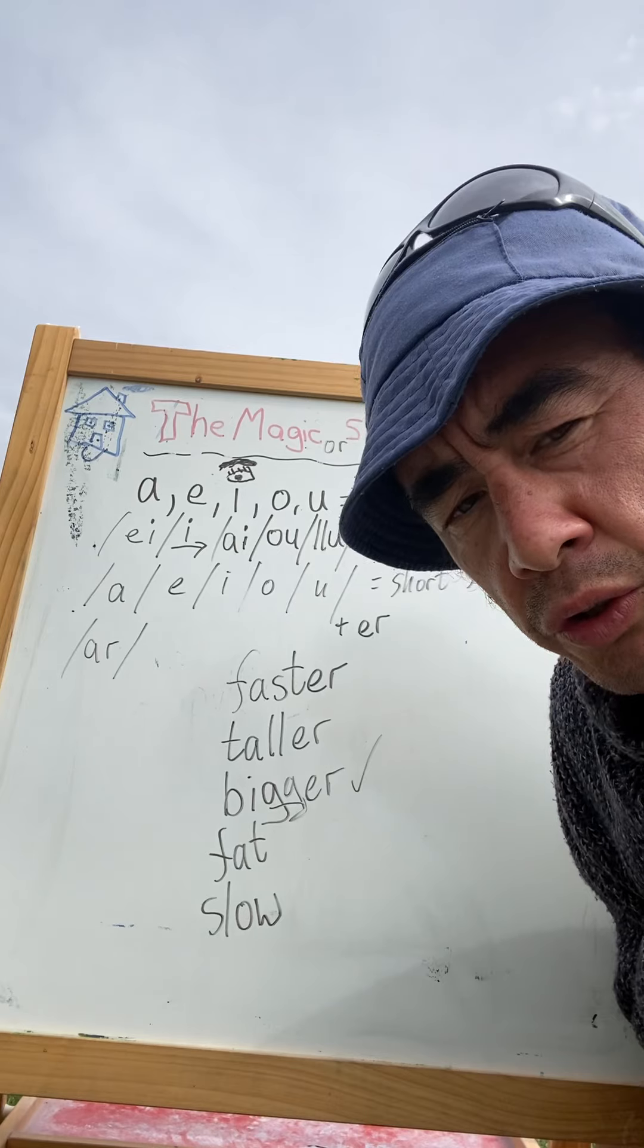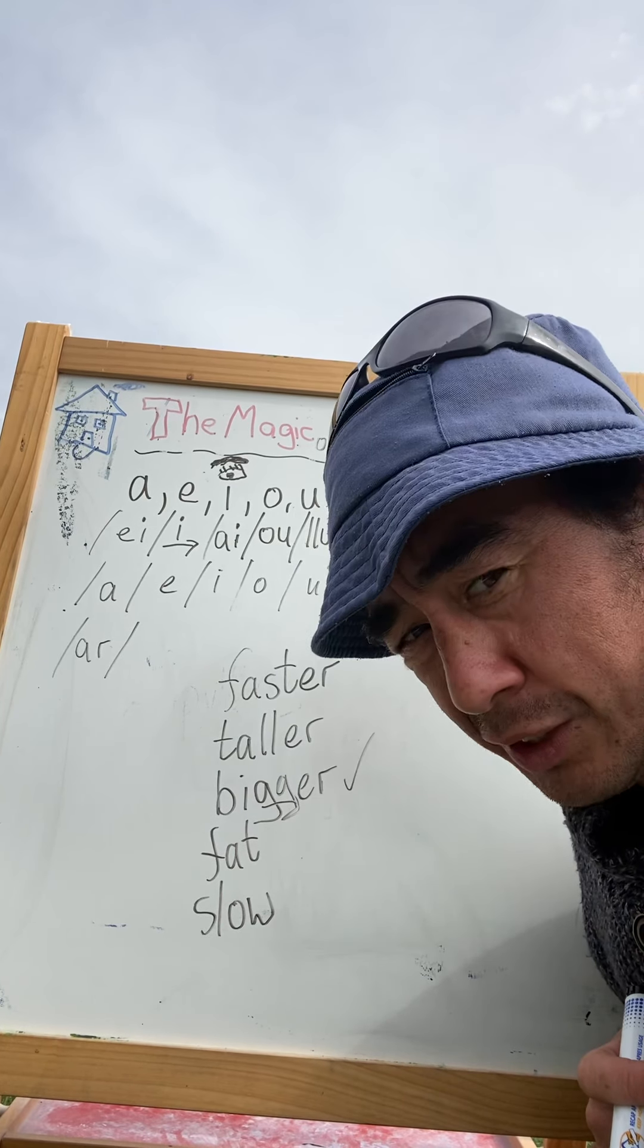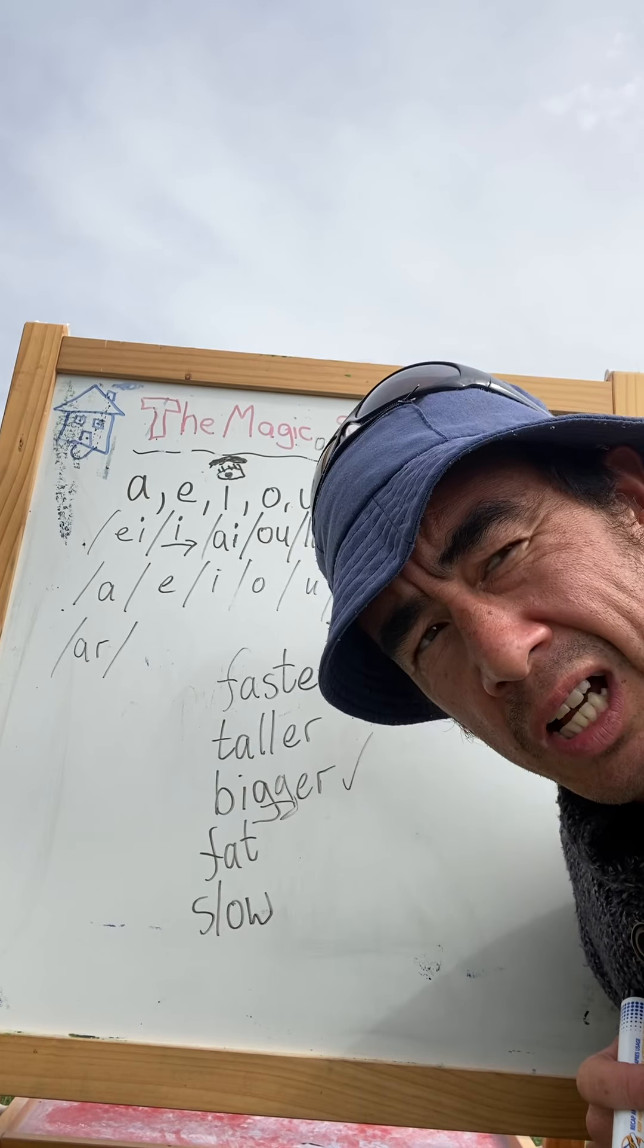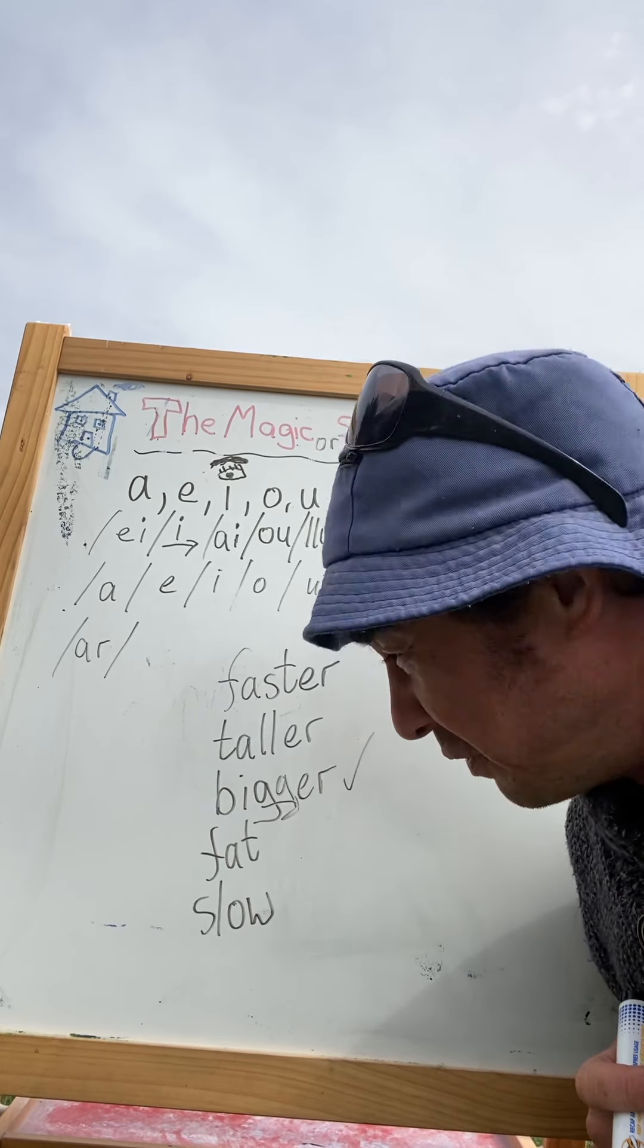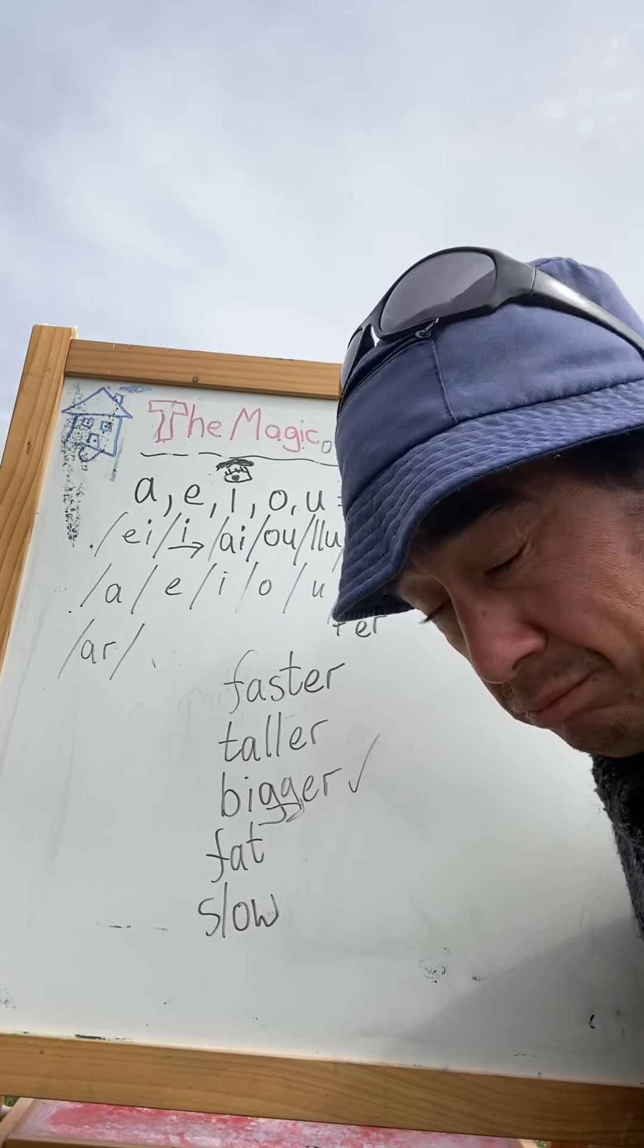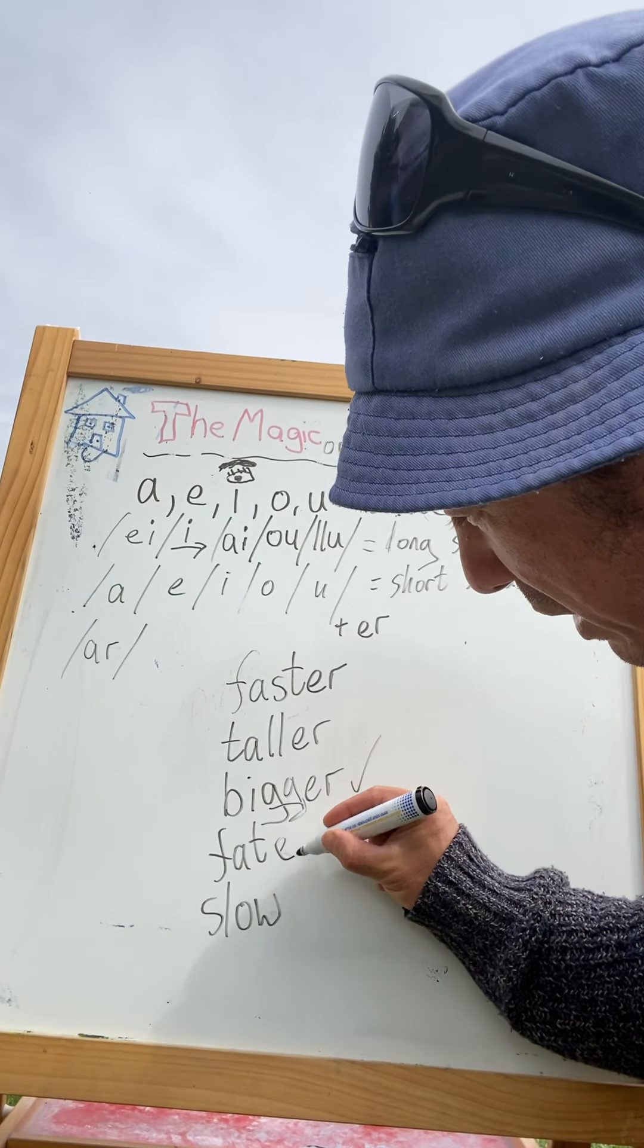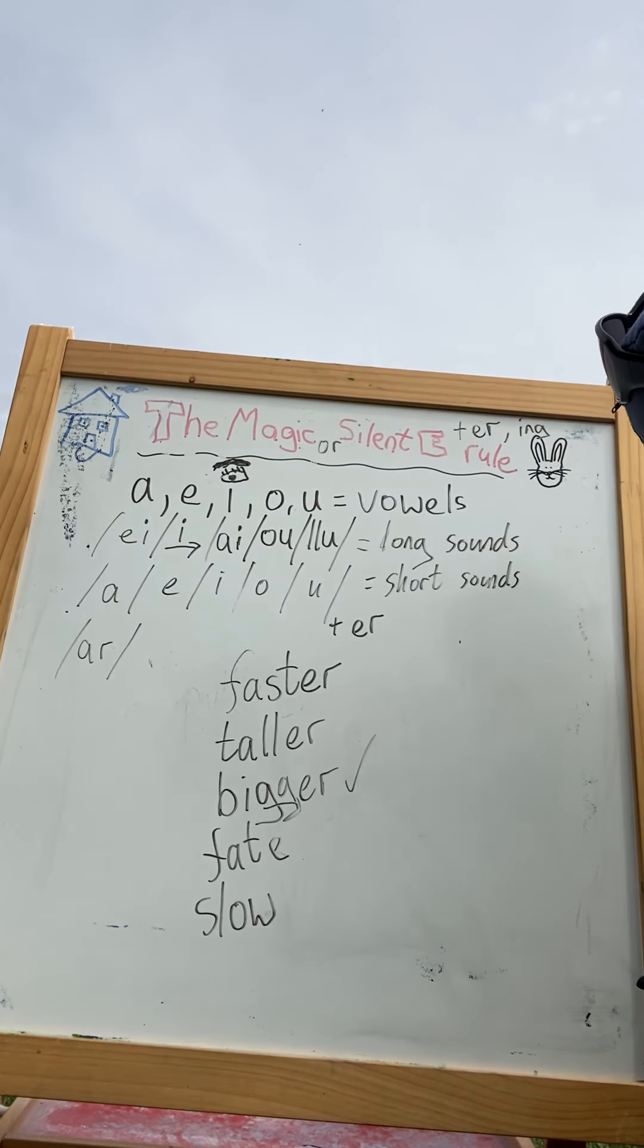And the reason, or the justification, that a lot of English teachers, non-native English teachers in schools, say is, well, if it's vowel consonant, add another consonant. And that's kind of correct. So vowel consonant, if we did this. Just wait a minute, Jamie, I'm making a video.